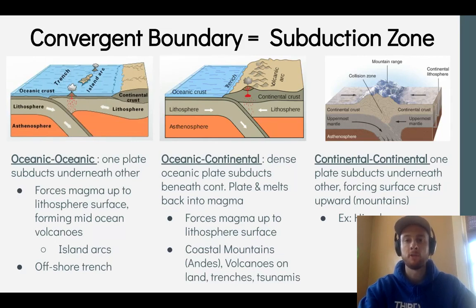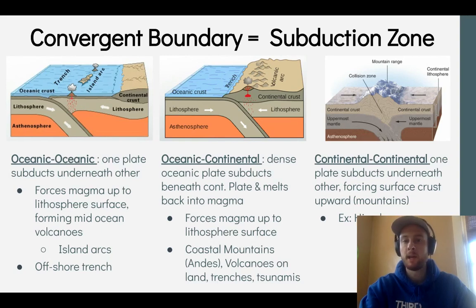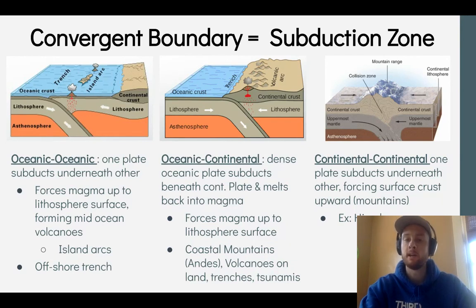Now we'll talk about convergent plate boundaries, which cause subduction — the sliding of one plate underneath another. This can happen between any two types of plates. When two oceanic plates collide, one subducts beneath the other, forcing magma up to the lithosphere and forming volcanoes. Because the magma continually rises in the same spot while the plate above shifts, each eruption creates a new island, giving us island arcs such as Japan and Indonesia. It can also form offshore trenches when the margin of one oceanic plate is pulled down beneath the other.